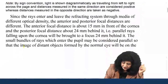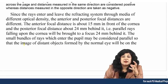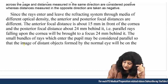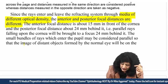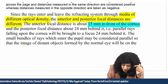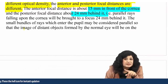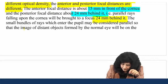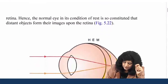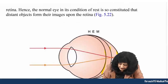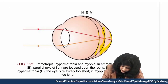Since rays entering and leaving the refractive system pass through media of different optical density, the anterior and posterior focal distances are also different. The anterior focal point is 15 mm in front of the cornea and the posterior is 24 mm behind it. Parallel rays falling upon the cornea will be brought to focus at the posterior focal point, exactly 24 mm. In emetropia, the image formed is exactly on the retina.